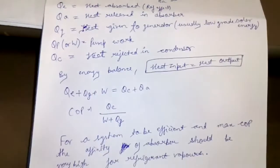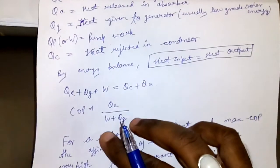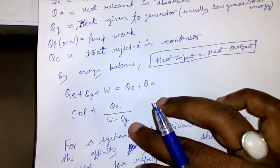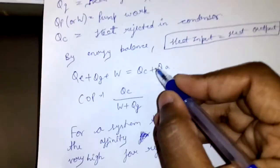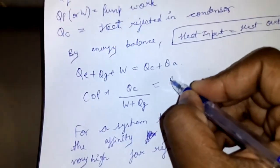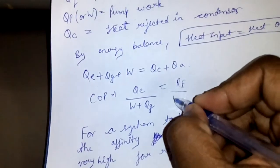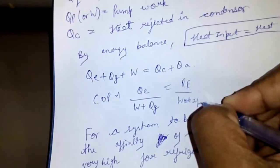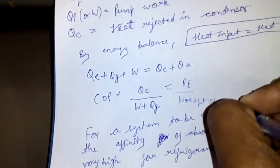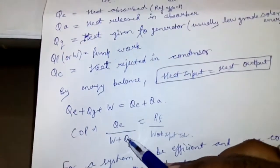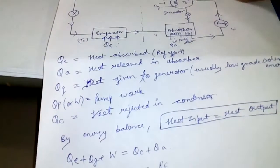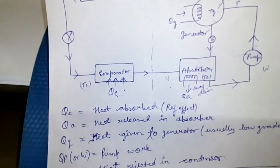Our main focus is to find the COP. COP is given by QE upon W plus QG, that is refrigeration effect upon total work input. Here W is the pump work and QG is the heat supplied in the generator.